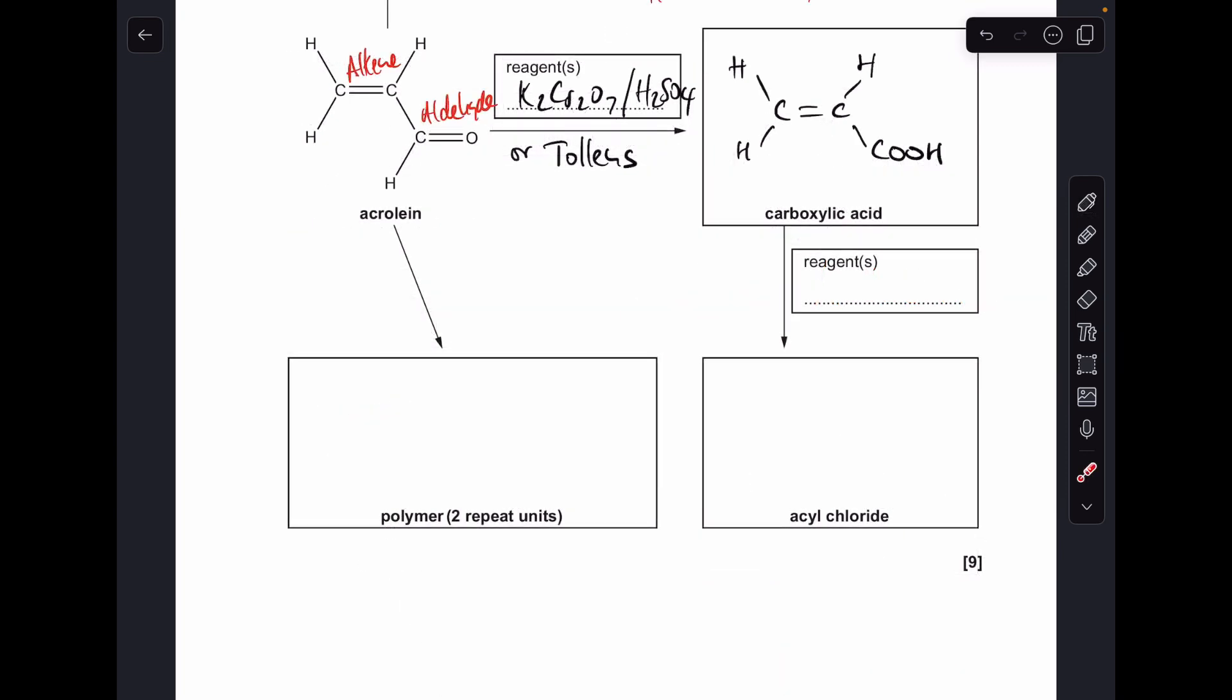So moving on to the bottom half of the flowchart, I'll do this one first. We're converting the carboxylic acid functional group into an acyl chloride functional group. And for some reason, students often forget this one. So the reagent for this is thionyl chloride. The formula of that is SOCl2 and that would be the structure for the acyl chloride.